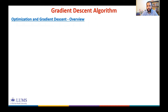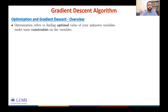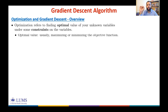I will start with a quick introduction about optimization problems — how we formulate an optimization problem — and then move towards gradient descent. Optimization refers to finding the optimal value of your unknown variables under some constraints on the variables.